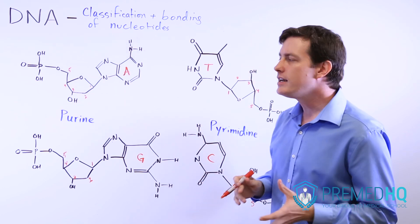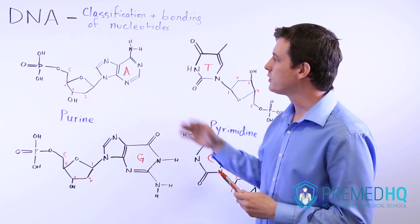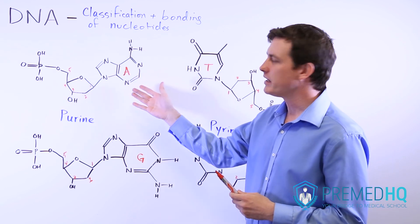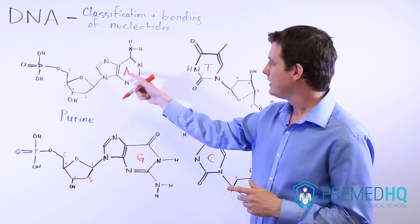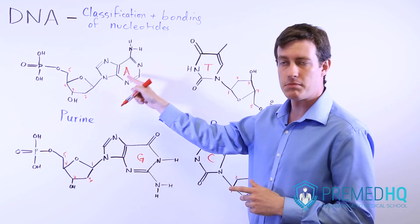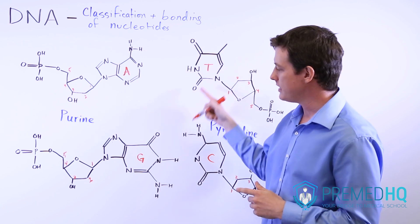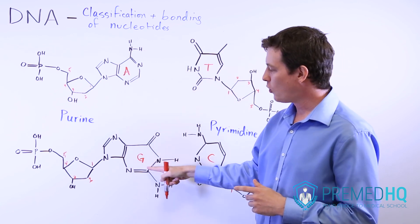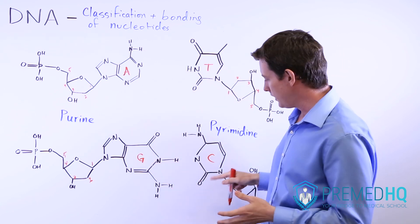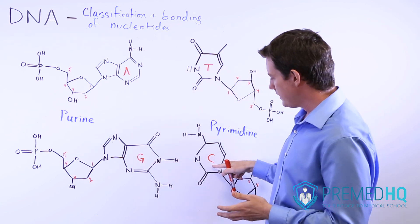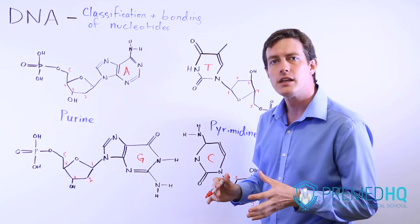With DNA, there are four different nucleotide bases that you'll encounter. There's adenine represented by A, thymine represented by T, guanine represented by G, and C here stands for cytosine.